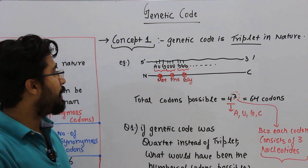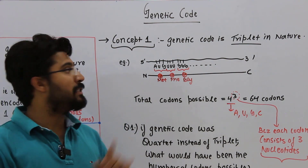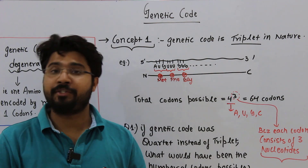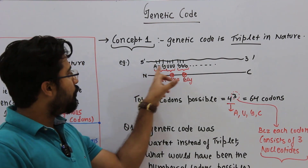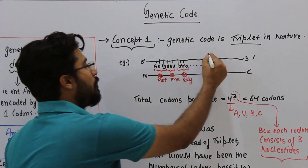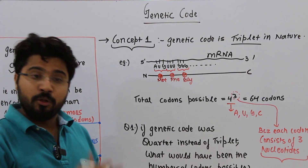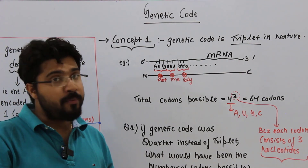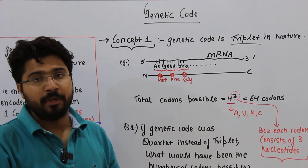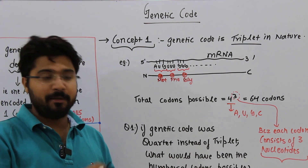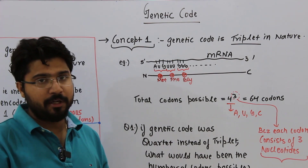Concept number 1, which is very important to solve a few numericals: genetic code is triplet in nature. What do we mean by triplet? The nucleotide sequence written on the mRNA, when it is being read by the ribosome, those nucleotides are always read in a set of 3 nucleotides, which is called a codon. A set of 3 nucleotides read on the mRNA by the ribosome is known as a particular codon.